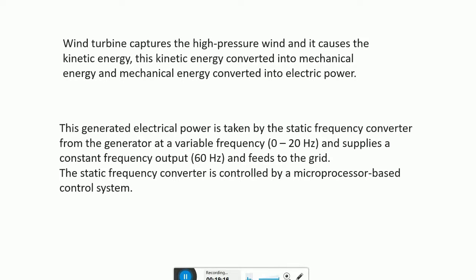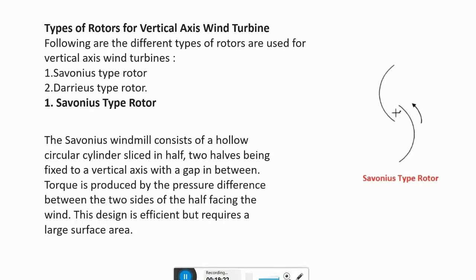This static frequency converter is also controlled by a microprocessor-based control system. There are different types of rotors for vertical axis wind turbines: the Savonius type rotor and the Darrieus type rotor. The Savonius type consists of a hollow circular cylinder sliced in half; two halves are fixed to a vertical axis with a gap in between. Torque is produced by the pressure difference between the two sides of the half facing the wind. The design is efficient but requires a large surface area.